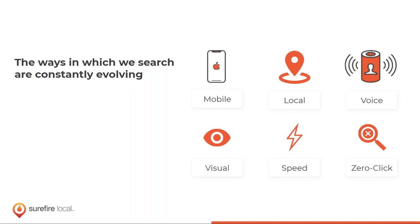Aside from the main search results page, the second most popular place people go on Google is actually the Images section. Google is attempting to serve up local images, local videos, and local results even in those subsections of its digital property. Another contributing factor is voice search, which has become really dominant in the last couple of years and presents a technical challenge for Google.